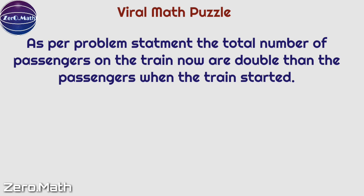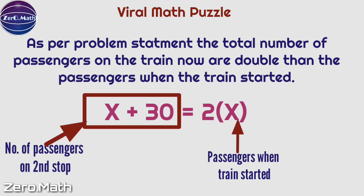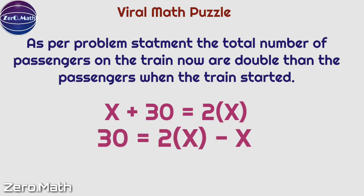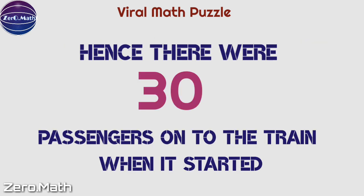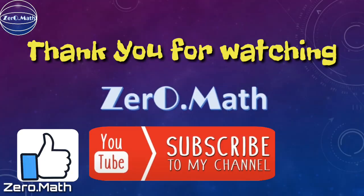As per the problem statement, the total number of passengers now is double the passengers when the train started. So X + 30 = 2 times X. This gives us 30 = 2X - X, hence X = 30. Therefore, there were 30 passengers on the train when it started.